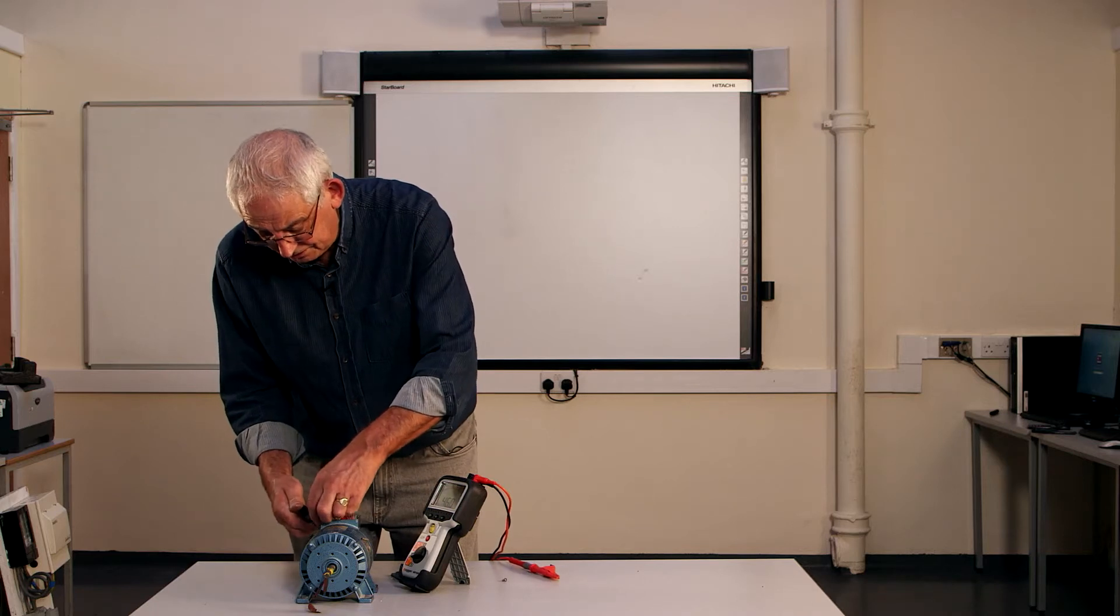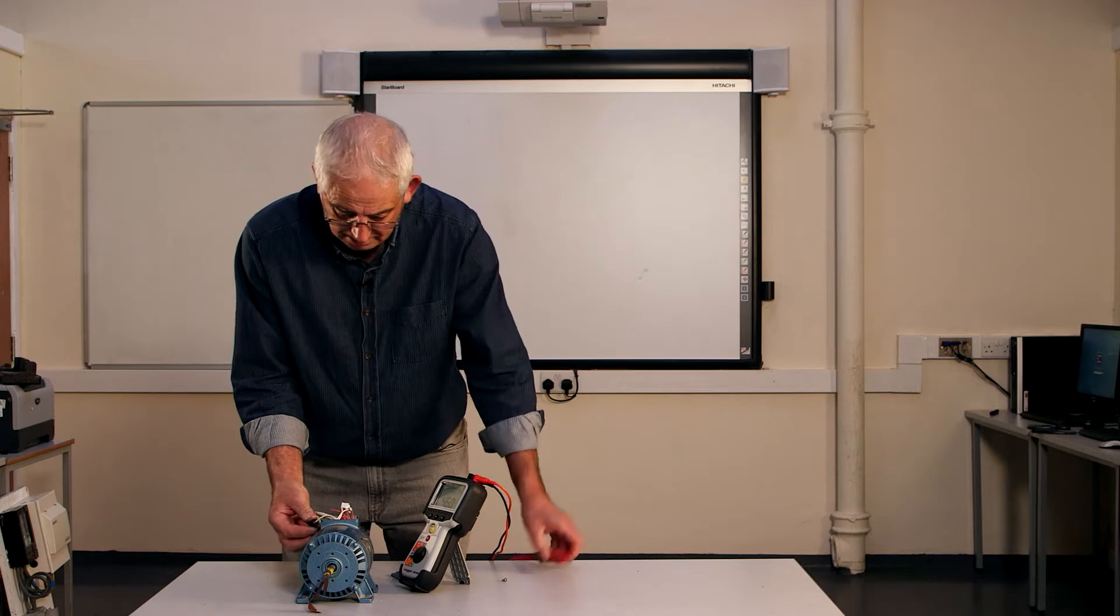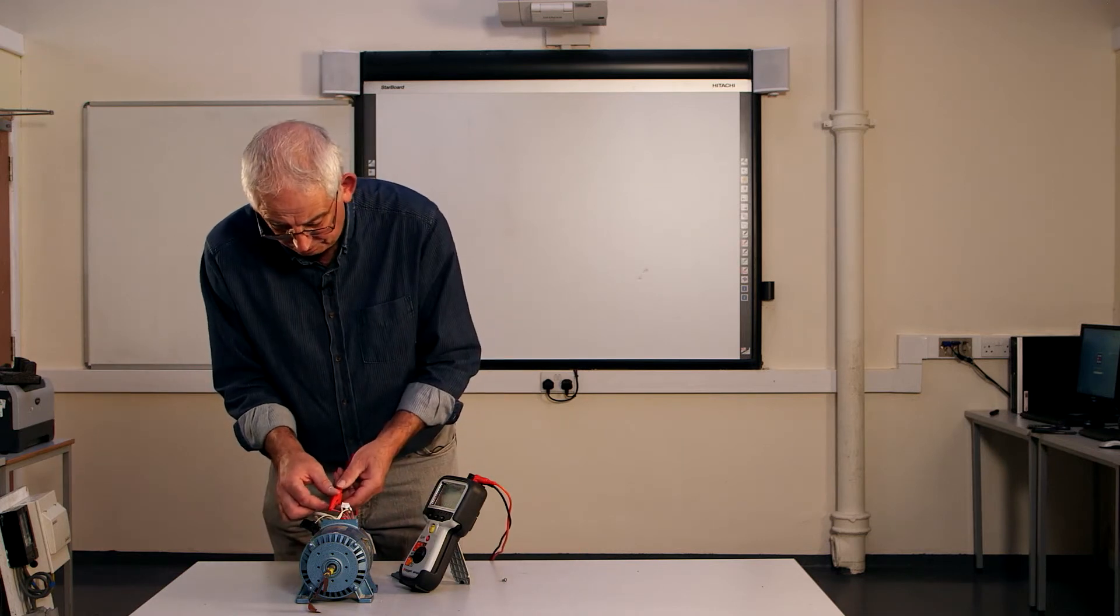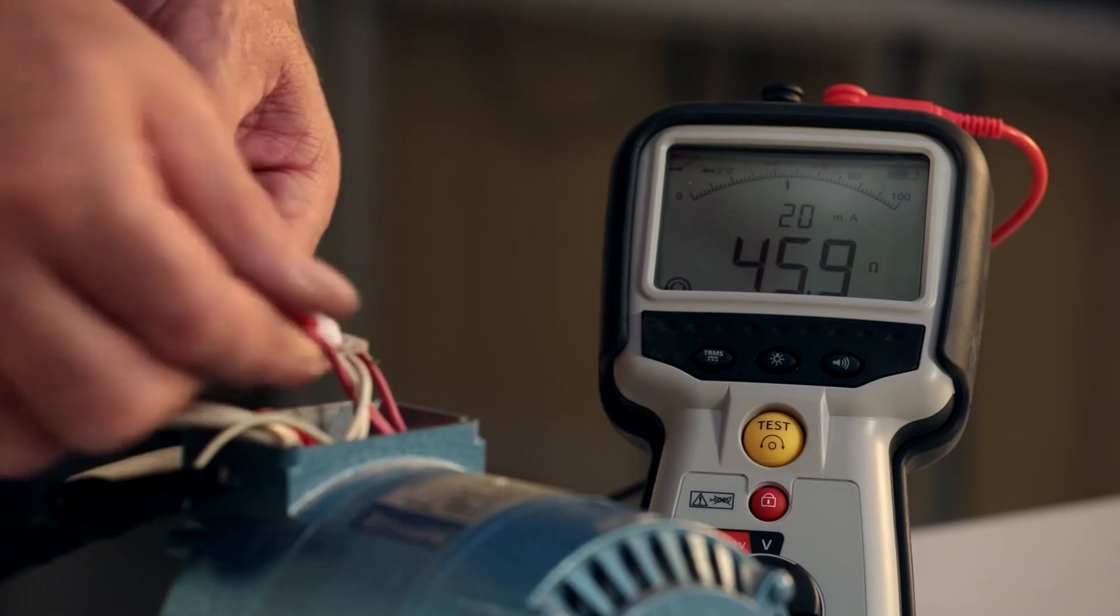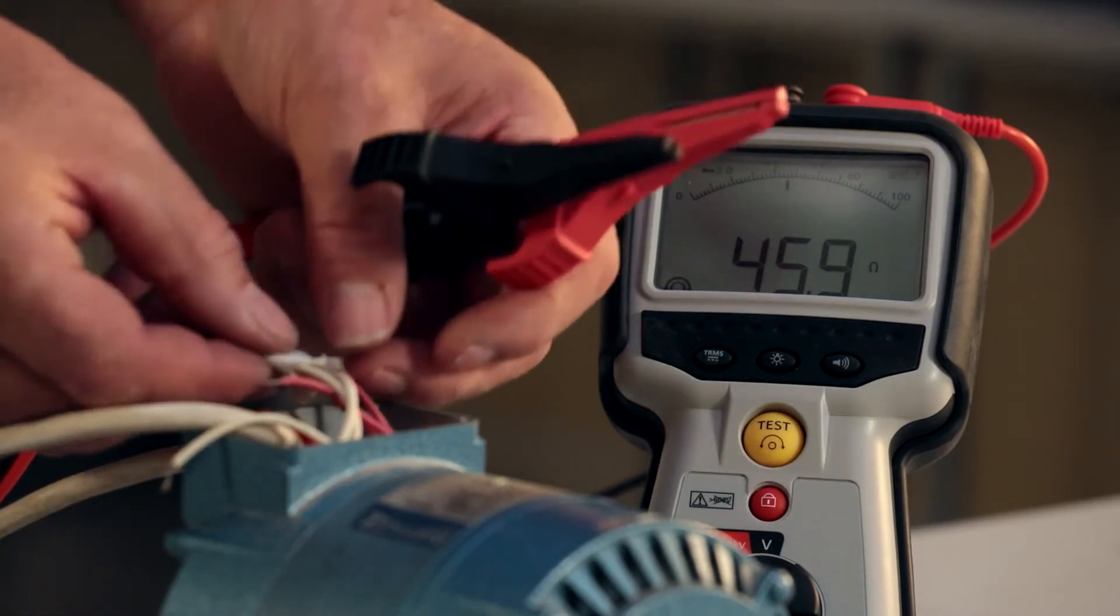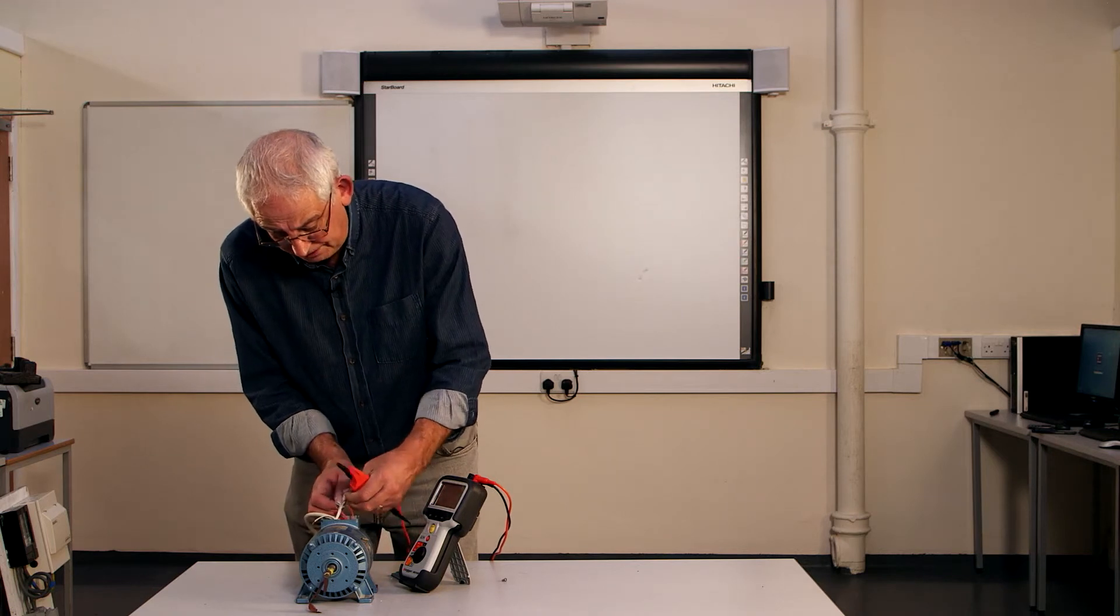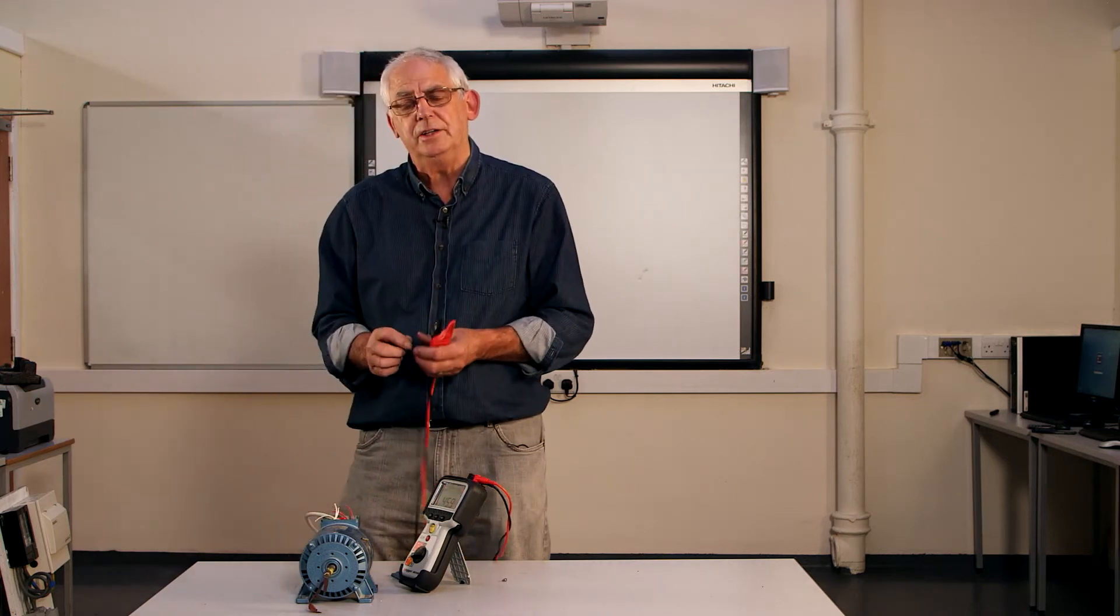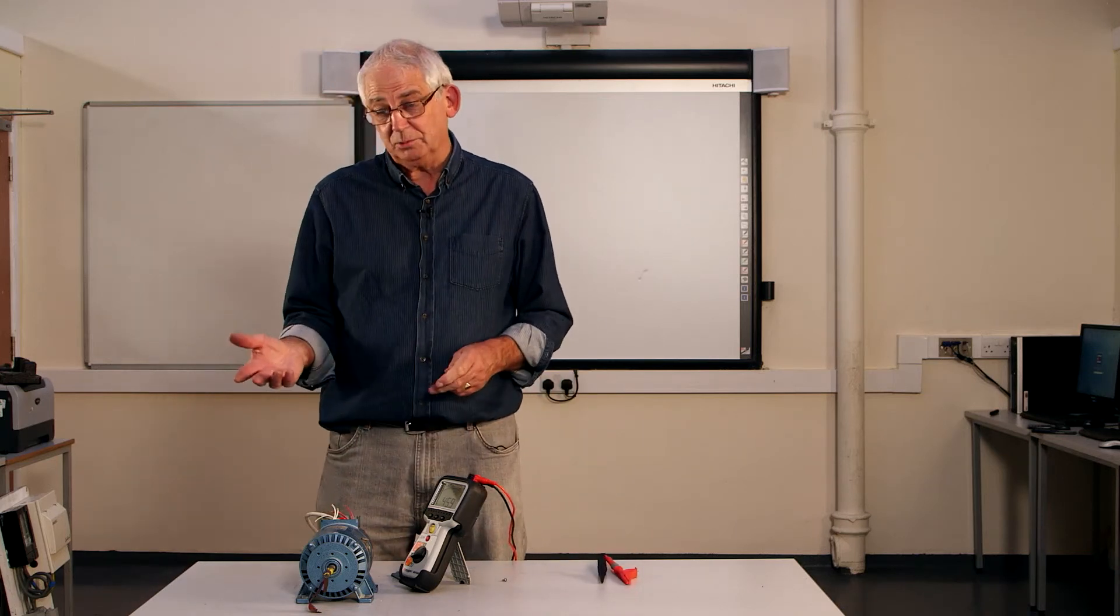Just check the last winding now to make sure that it's the same value. And again, 46. So at that point, I know that all of these windings are the same resistance value, so the motor is going to be very well balanced and it should work okay.